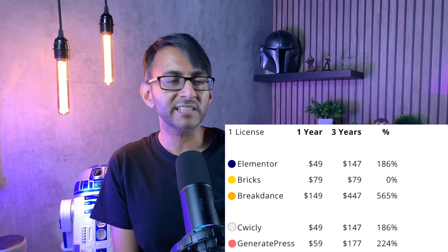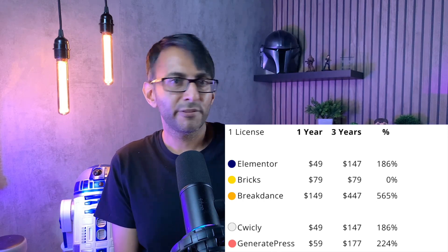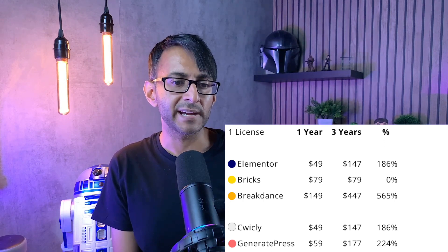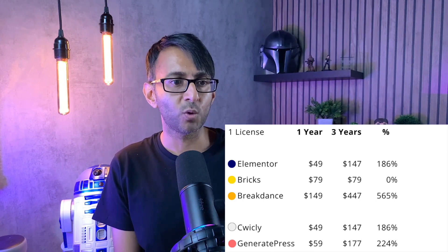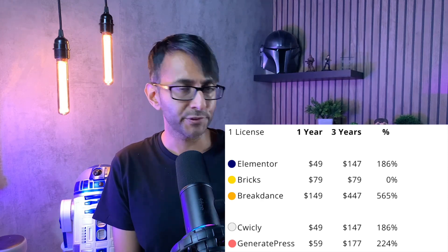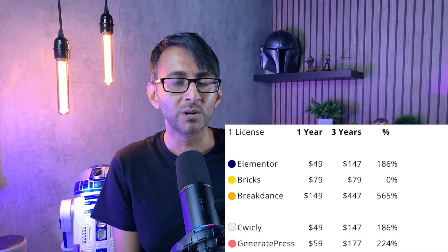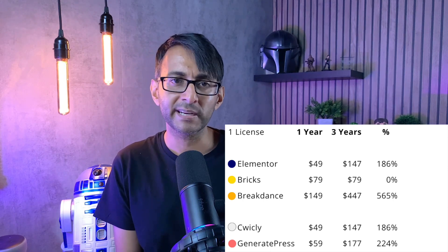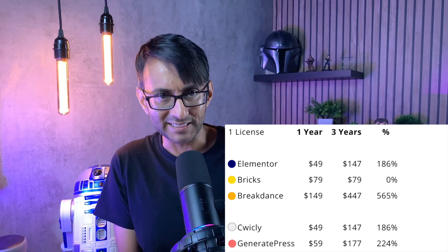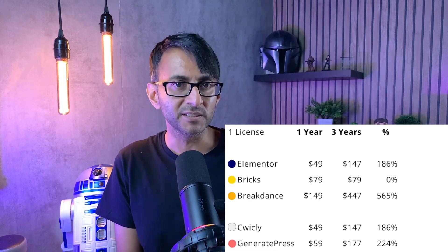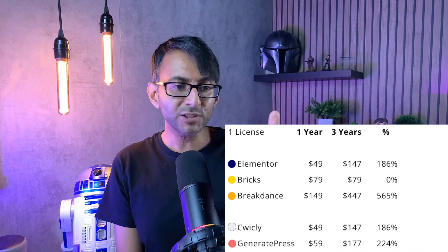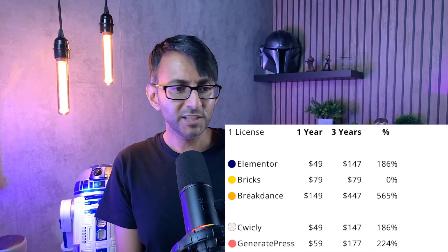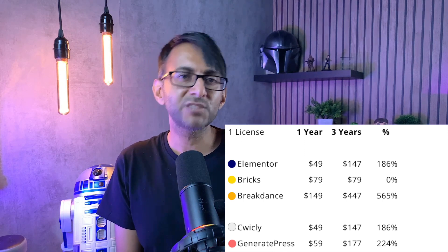What does that mean over three years? Let's say the average lifetime of a good website might be three years. Elementor, the cost is $147. For Bricks, $79 — because it's lifetime, you only ever pay $79 in total. So Elementor is about 186% compared to that. Breakdance: you will be paying $447 over three years for one license. That is crazy, crazy pricing — 565% more than what you could do with Bricks. That is ridiculous pricing.